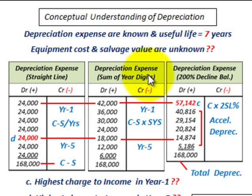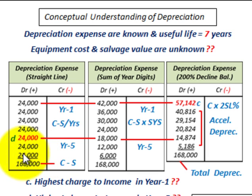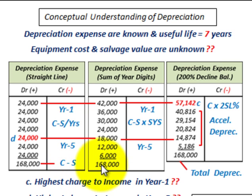The three methods are: the straight-line method, the sum of years digits method, and the double declining balance or 200% declining balance method. For the straight-line method, our depreciation base is cost minus salvage value divided by the number of years of life, giving us a constant depreciation expense each year. The total depreciation expense is $168,000, which equals cost minus salvage value, and that total is the same for each method.